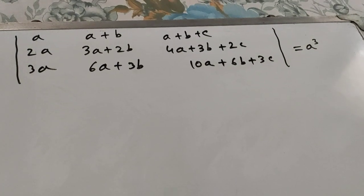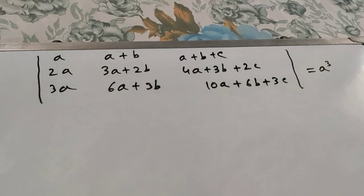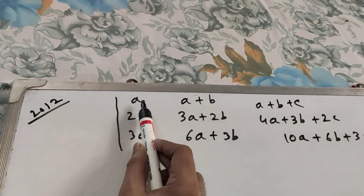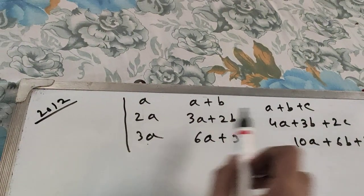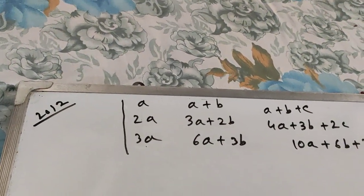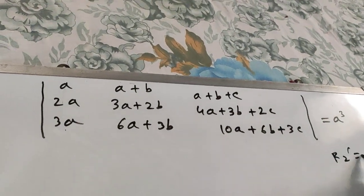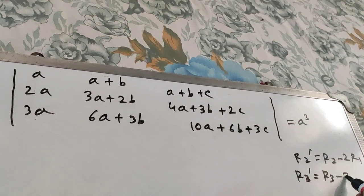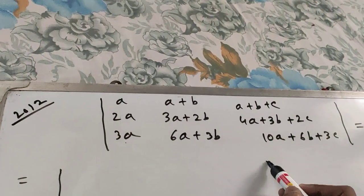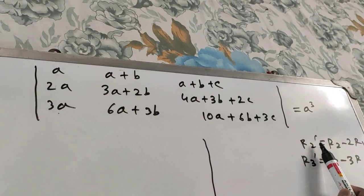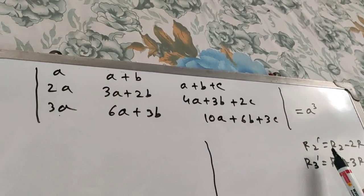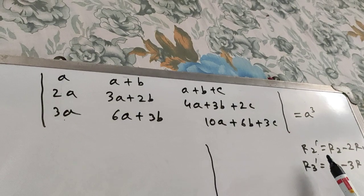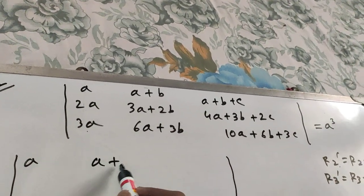If you remember what I told in the last video, your preliminary target should be how to bring zeros in a particular row or column. Just see the first column — a, 2a, and 3a. Since 2a is double of a and 3a is thrice of a, we can apply R2 dash = R2 minus 2R1, and R3 dash = R3 minus 3R1. Dash means that particular row is being changed; others are not. So only R2 and R3 will be changed; R1 will not be changed.